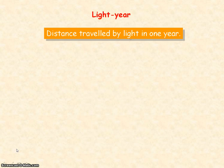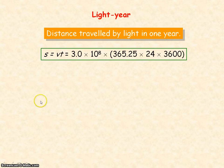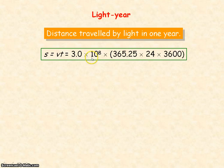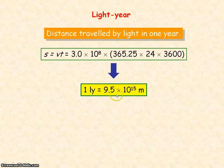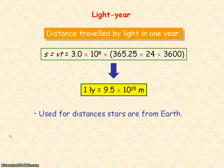The light year is the distance travelled by light in one year. It is not a unit of time. So distance travelled will equal the speed of light multiplied by the time it takes. The speed of light is 3.0 times 10 to the 8 meters per second, and the time is one year in seconds. Multiplying the speed and the time in seconds, we get one light year is equal to 9.5 times 10 to the 15 meters. We use this unit when looking at distances of stars from Earth.